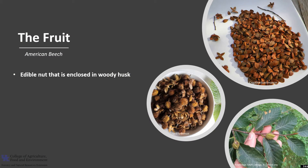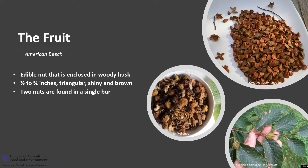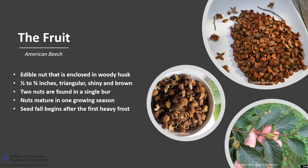The fruit is an edible nut enclosed in a woody husk that looks like a burr. The nuts are relatively small, about one-half to three-quarters of an inch long, and they're triangular in shape and shiny and brown. There's usually two nuts in a single burr, but occasionally you'll find three. The nuts mature in one growing season, somewhere between September and November, and the seeds will begin to fall after the first heavy frost, which causes those burrs to open. Seed drop will be complete within a few weeks. Most of the seeds will drop near or right underneath the parent tree, or roll down a steep slope, so in general dispersal is somewhat limited. Occasionally rodents may carry seeds short distances, and blue jays may disperse those seeds further.